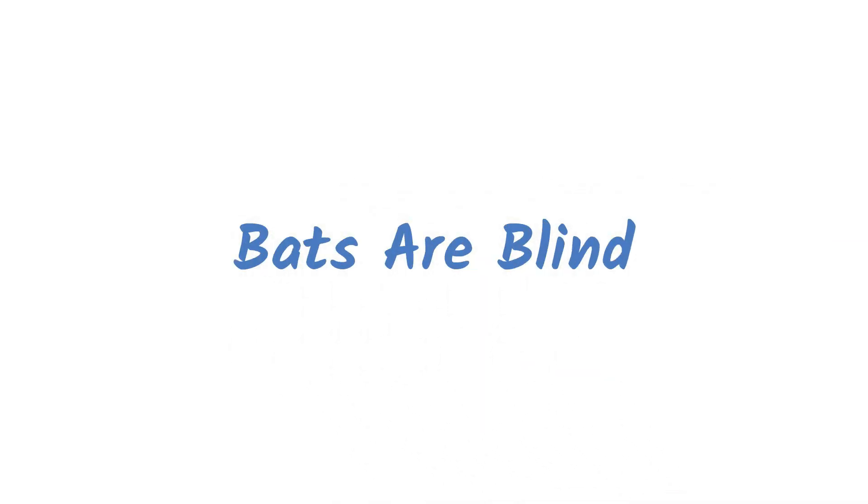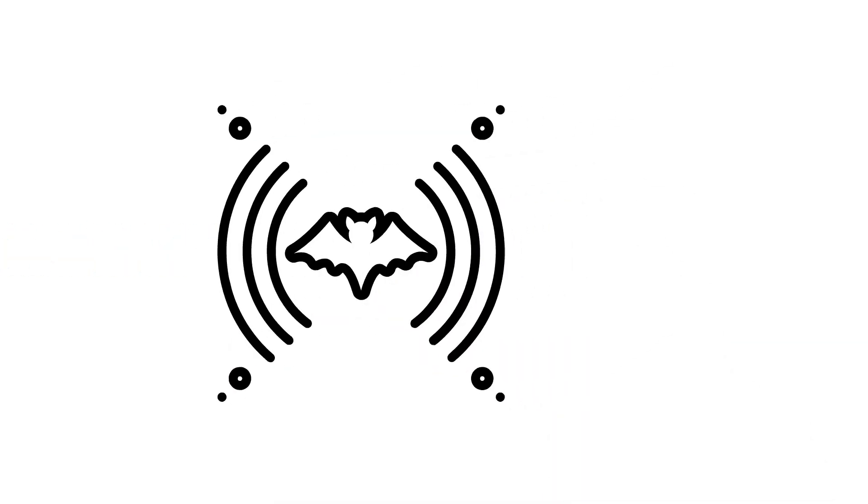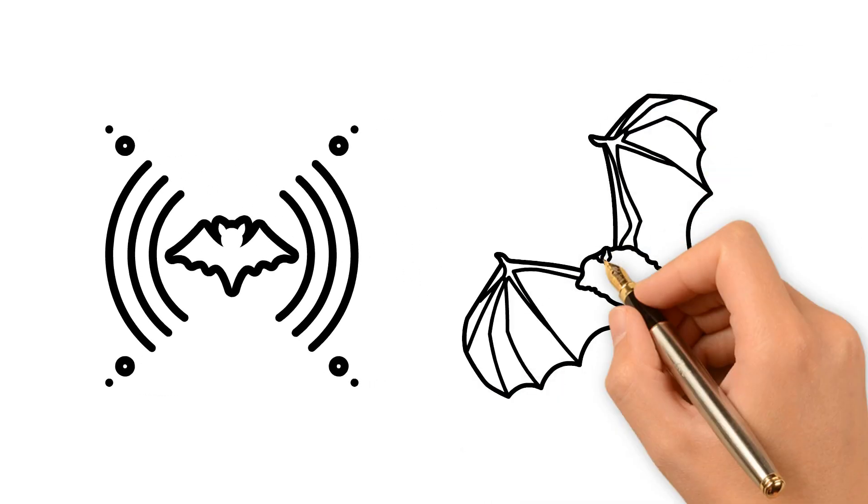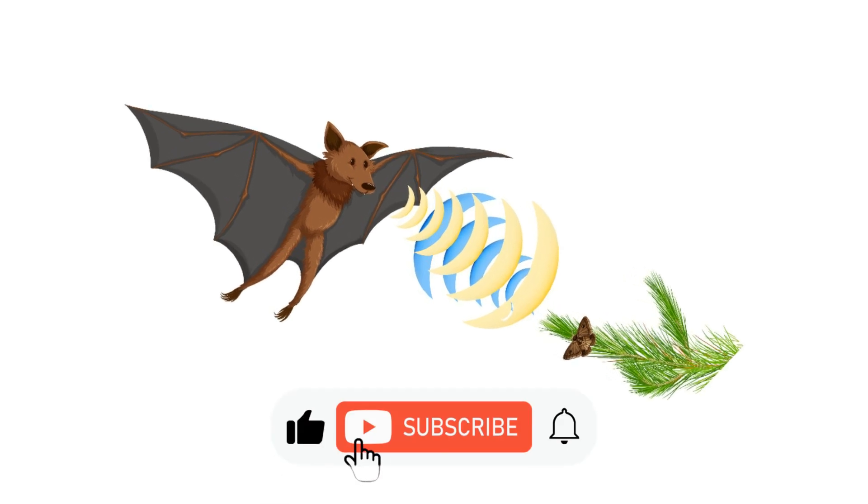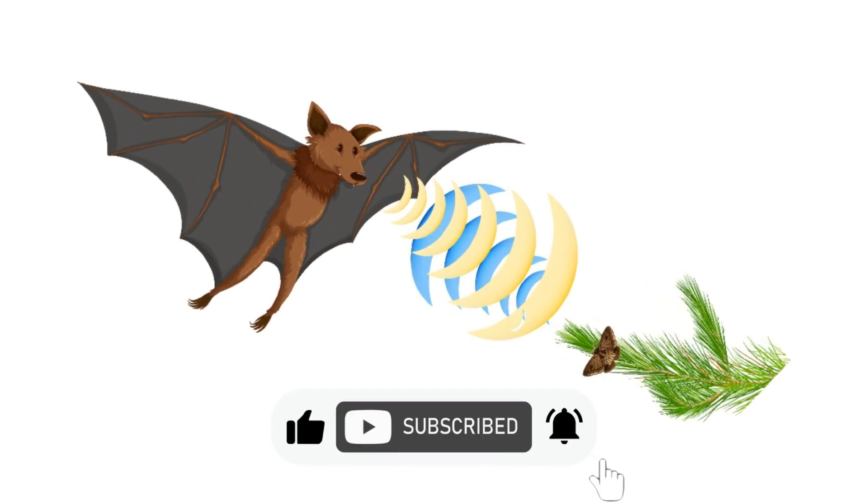Bats are blind. Bats use echolocation, not sight, to navigate, but they're not completely blind and can see some light and shapes. Their eyesight isn't great, but it can supplement their echolocation for tasks like finding landing spots.